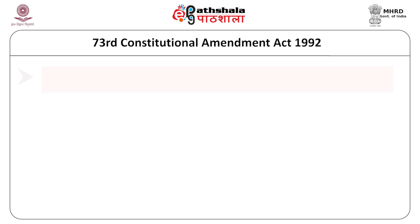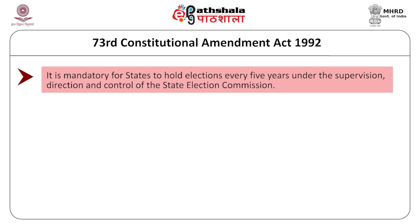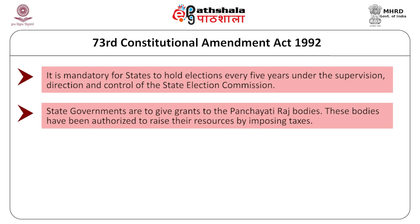It is now mandatory after the 73rd Amendment that all states hold elections to the Panchayati Raj bodies every five years. Earlier this was not the case, and many states did not conduct elections periodically — there were long periods when elections were not conducted. Besides this, there is a provision of giving grants to the local bodies so that they are able to carry out their work in a fine manner.